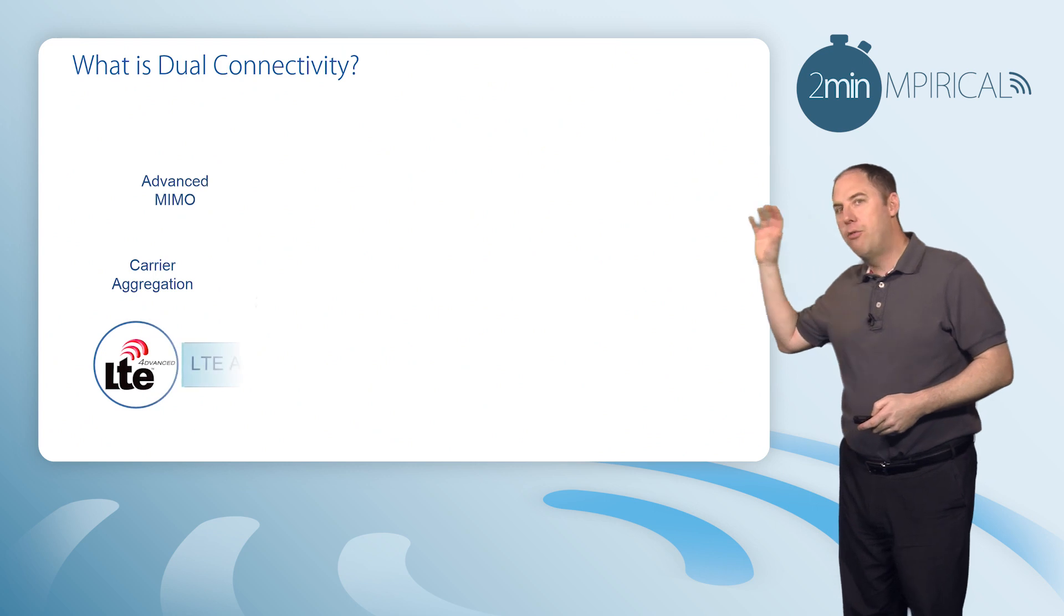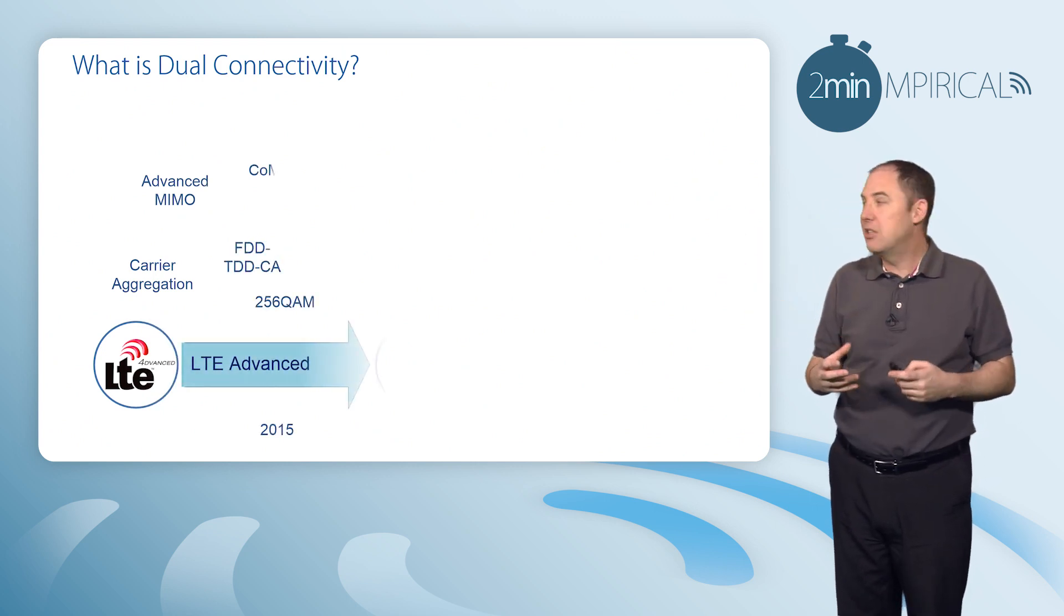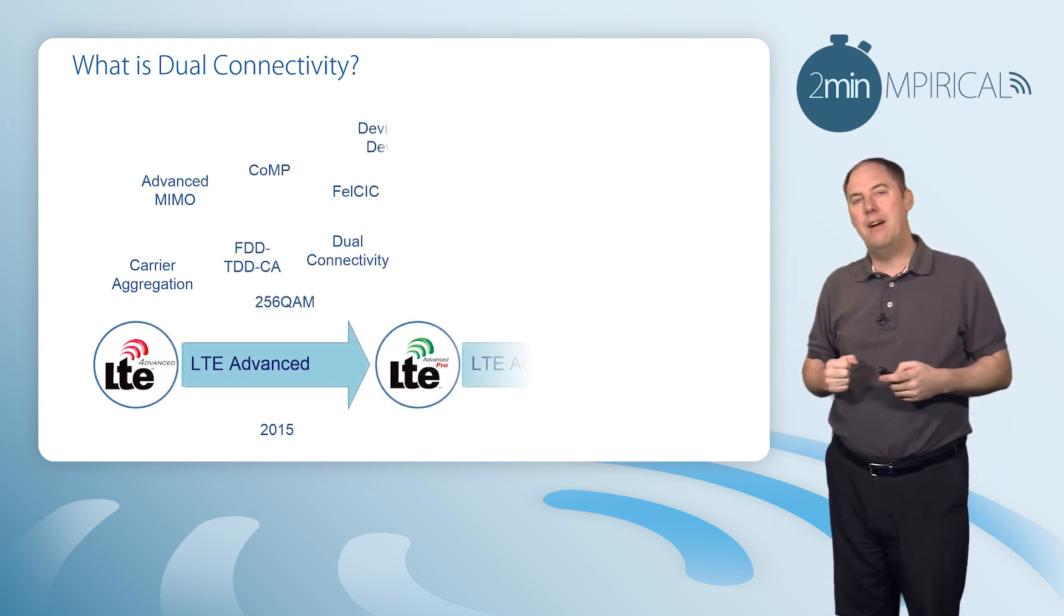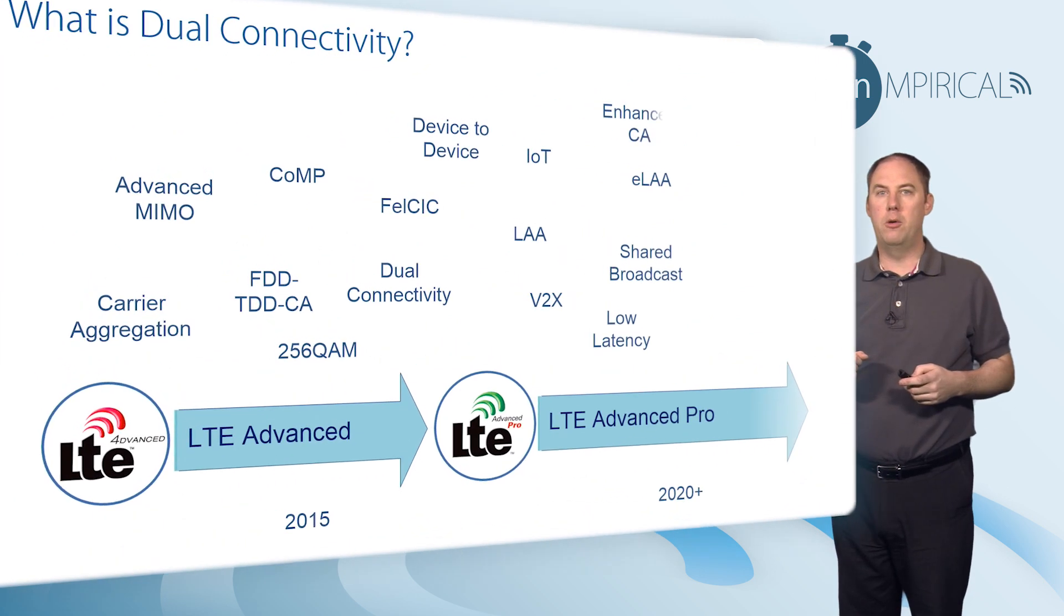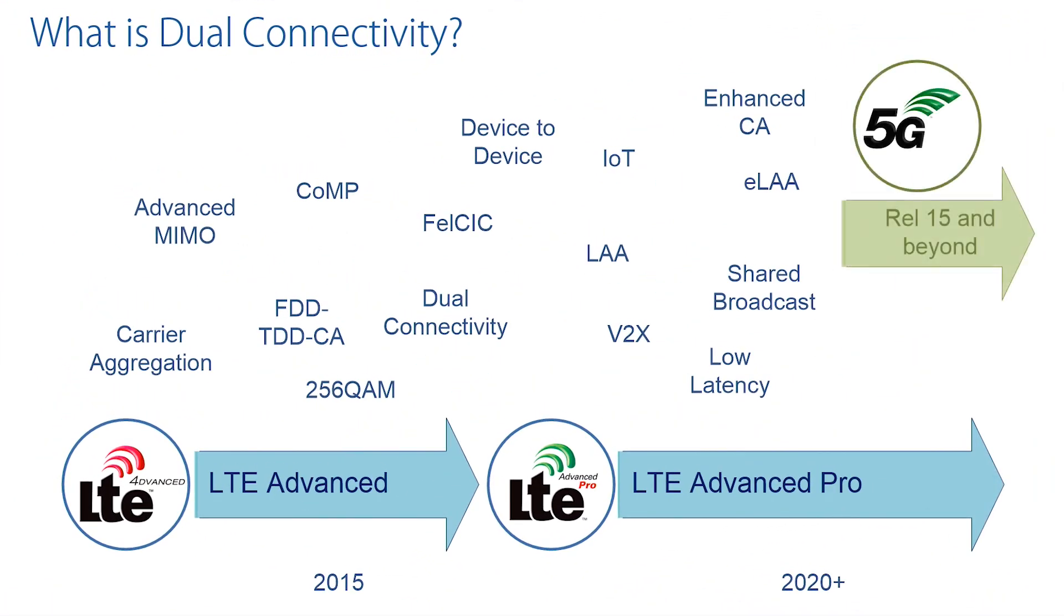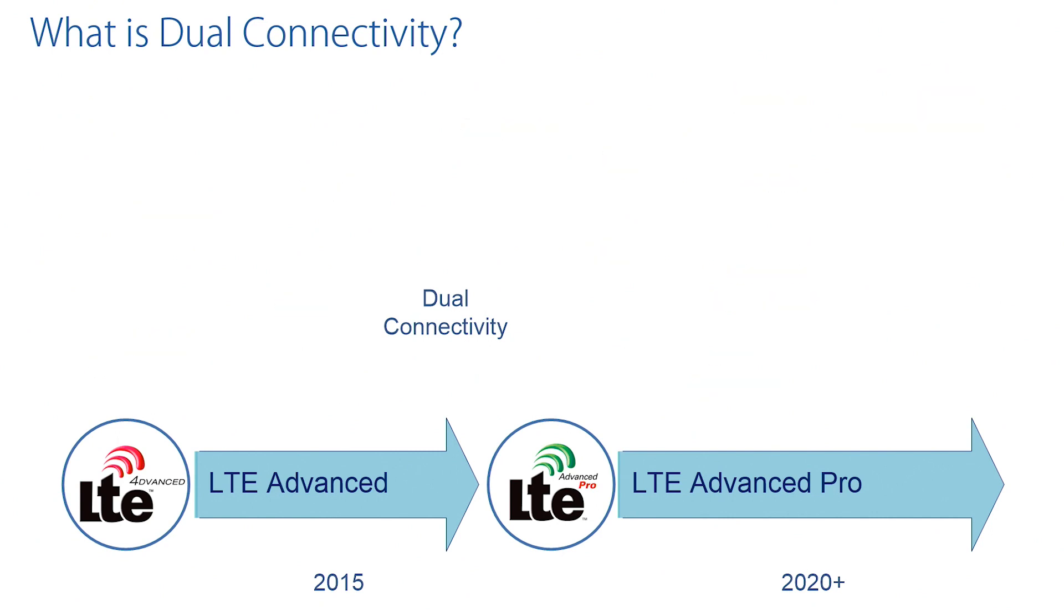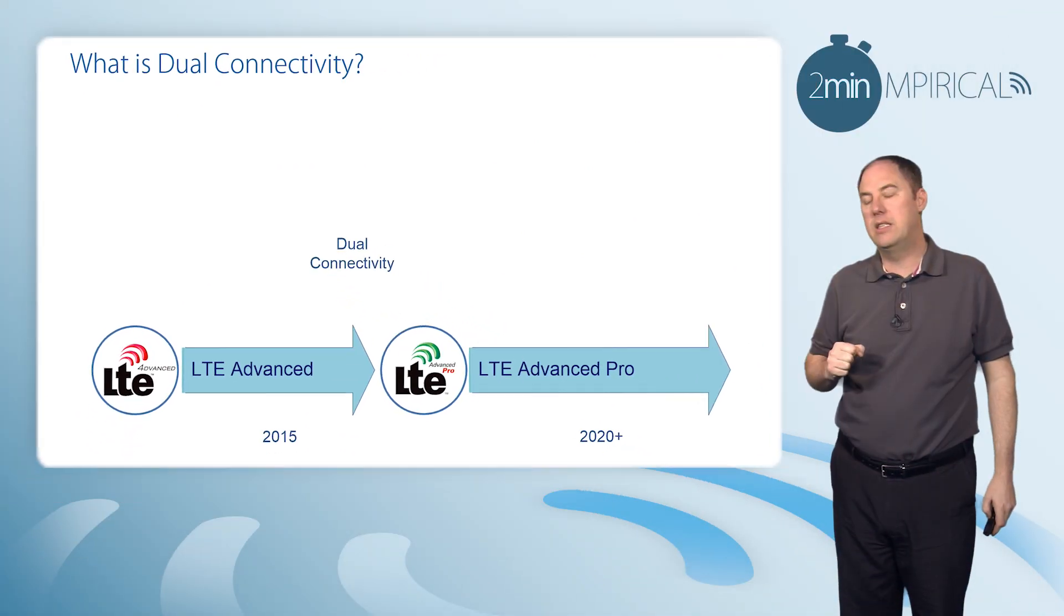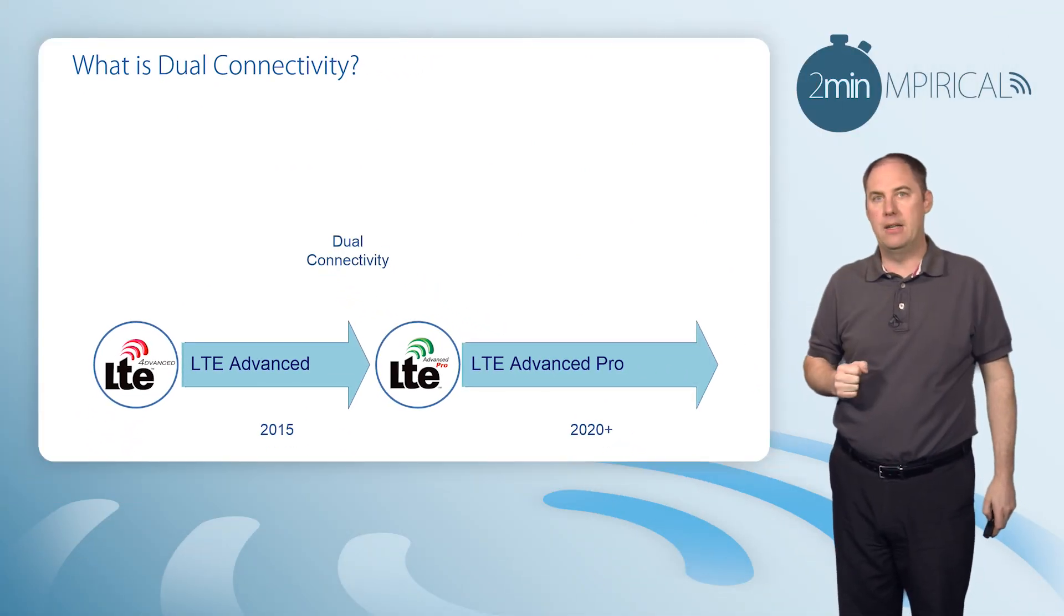It's evolving through additional enhancements referred to as LTE Advanced and then on to LTE Advanced Pro. With this, you get various radio enhancements to optimize performance, latency, and capacity. One of the key ones here is dual connectivity, which was added as part of LTE Advanced.